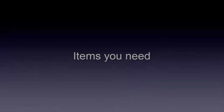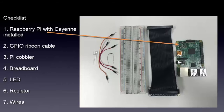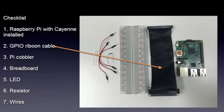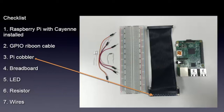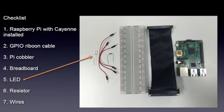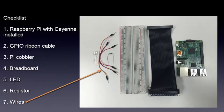Here are the items you'll need: a Raspberry Pi with Kyan installed, GPIO ribbon cable, Pi cobbler, breadboard, LED, a resistor, and all the wires you need to connect.